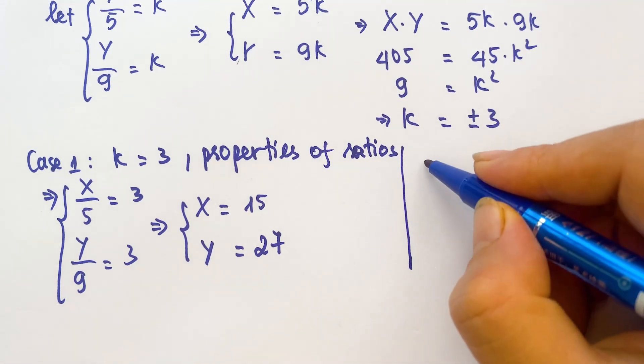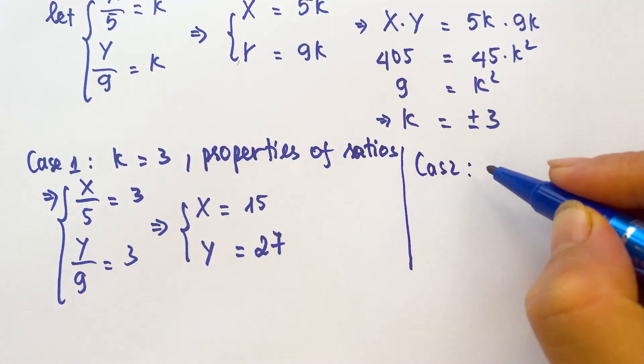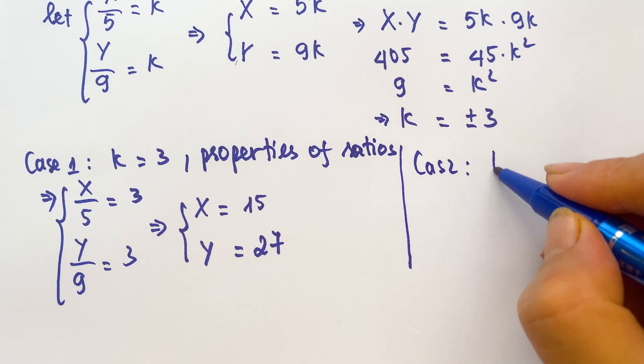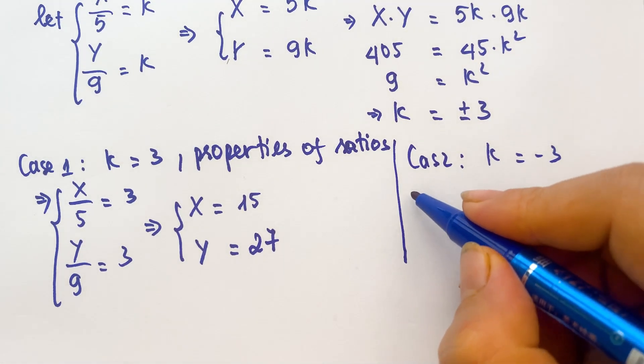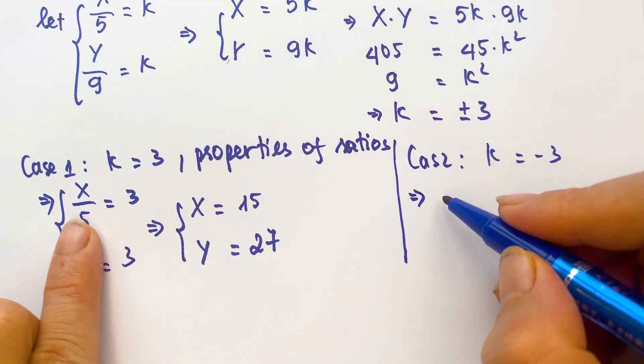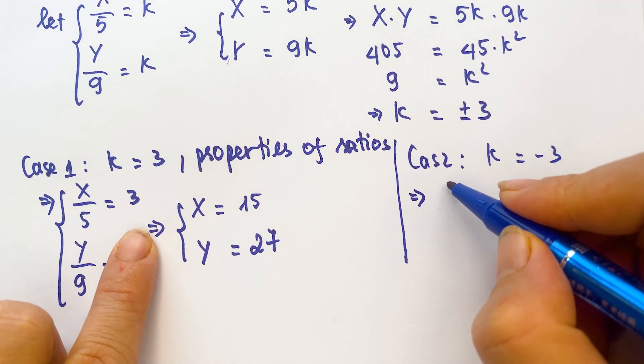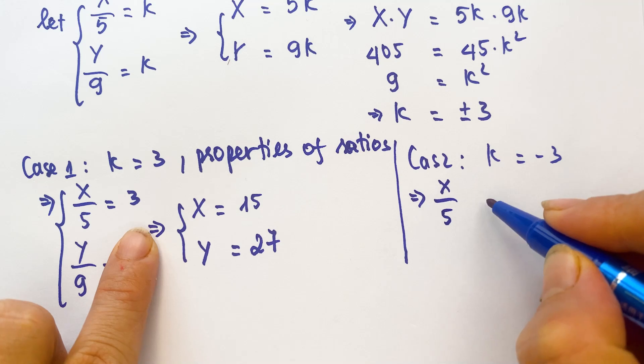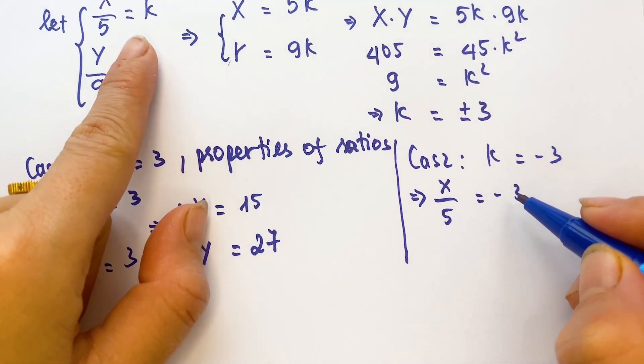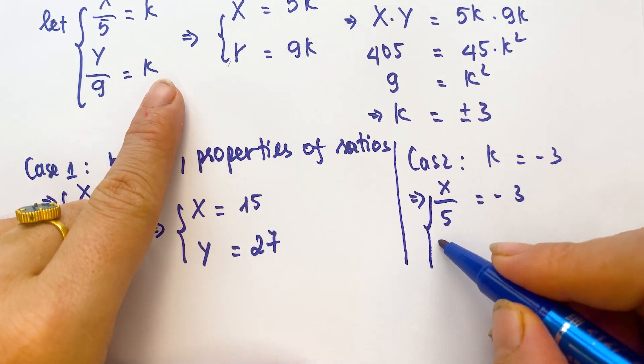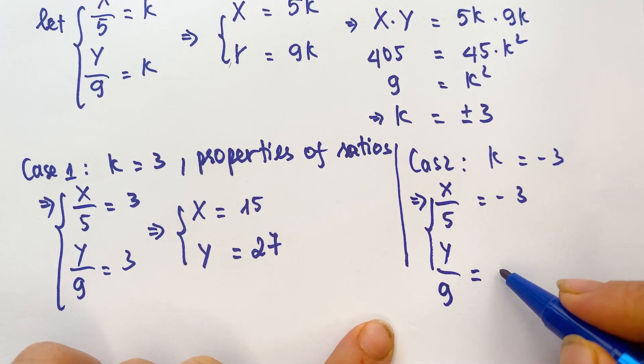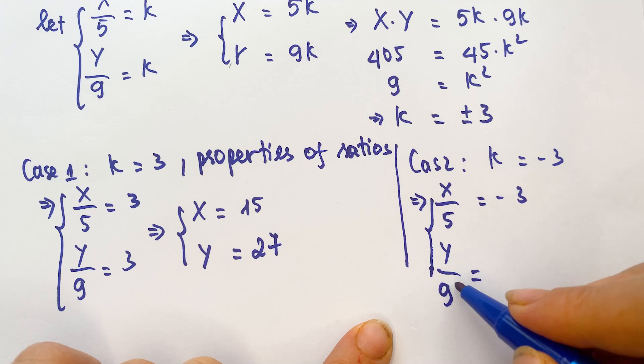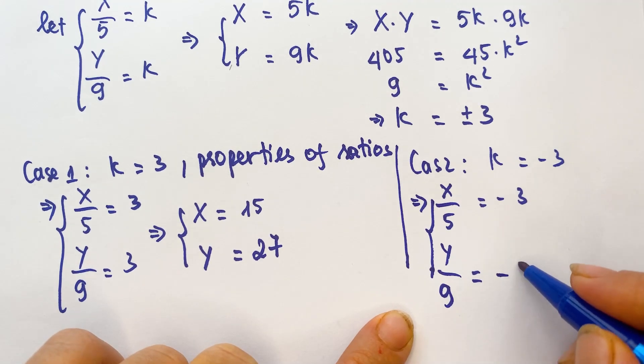And so, for case 2, you can have k equals minus 3. And relative to case 1, you can see x over 5 equals minus 3 here, and y over 9 equals minus 3.